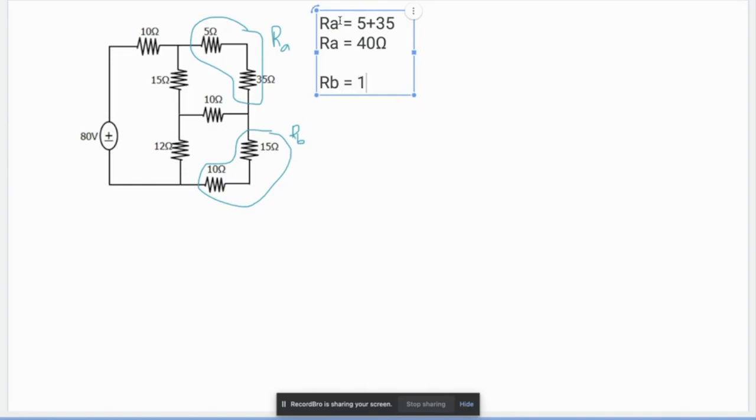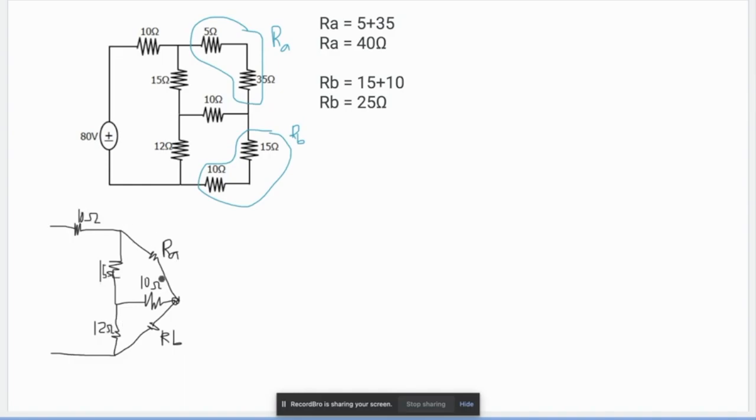Then our Rb is equal to 15 plus 10 resulting to Rb of 25 ohms. After doing that, we now have it will be like this. So this is your Ra, then this is 10 ohms, then this is Rb, then 12, 15, then this one is 10.